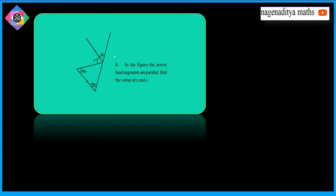Next problem: in the figure, the arrowhead segments are parallel. Find the value of X and Y. We can see this is a triangle. Let this angle be Z. These two lines are parallel lines and this is a transversal, so these two angles are equal because of corresponding angles.